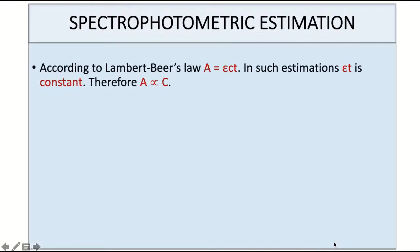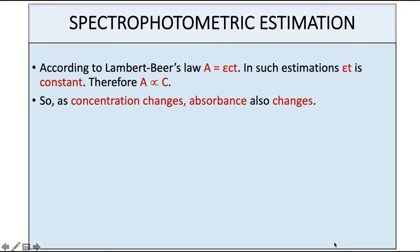According to Lambert Beer's law we have the equation A is equal to epsilon times c times t. We have already derived this equation. In such estimation, epsilon and t are constants and hence we can say that absorbance is directly proportional to the concentration.